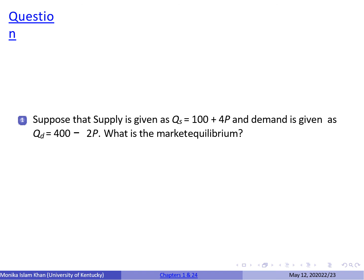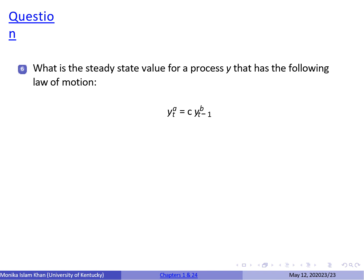Let's solve a simple question. Suppose supply is given as Q_s = 100 + 4P and demand is given by Q_d = 400 − 2P. To find the market equilibrium, set Q_s equal to Q_d and solve for P, then find the corresponding quantity associated with that level of price.